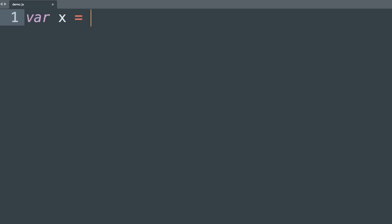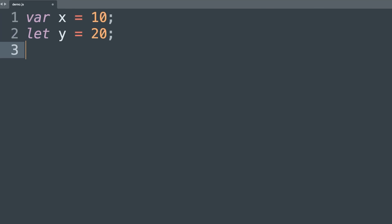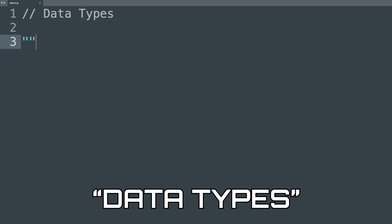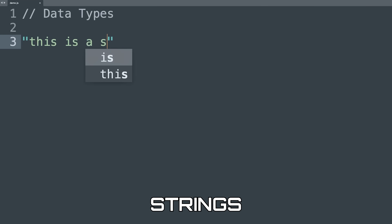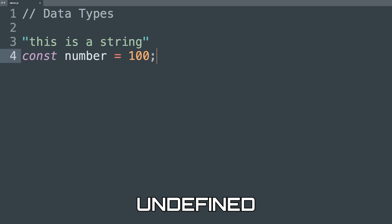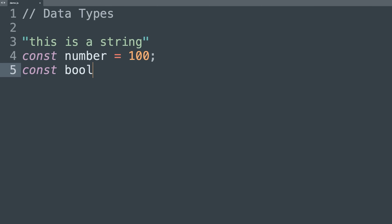First, you're going to want to learn variables — what is a variable, how does it work, what's the point of it. We have three main ways to declare variables: var, let, and const. You want to understand the difference between those keywords. Then we're going to look at data types: strings, numbers, boolean, null, undefined — you want to know what those types are and the differences between them.